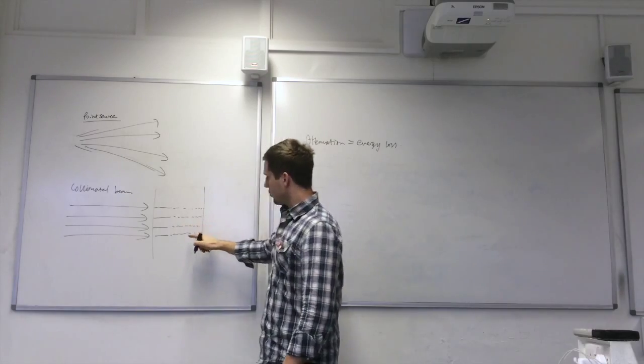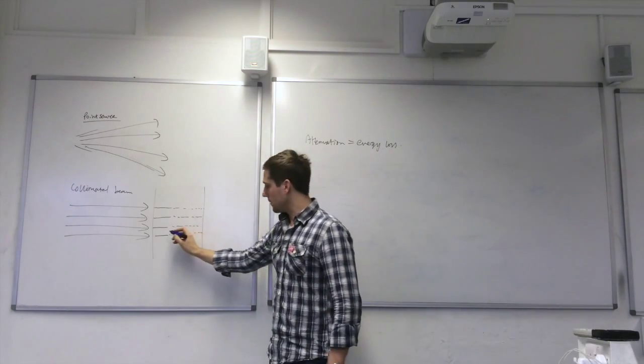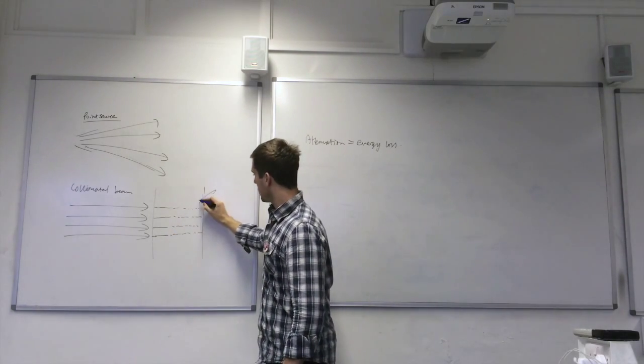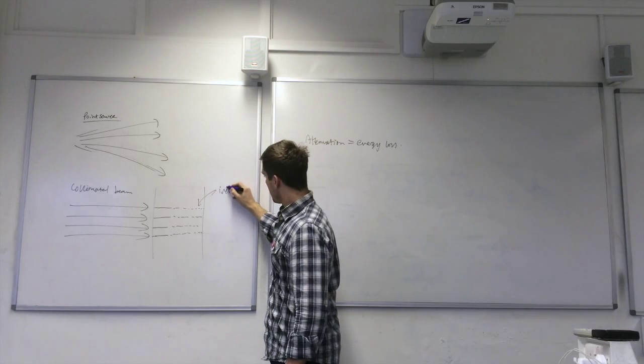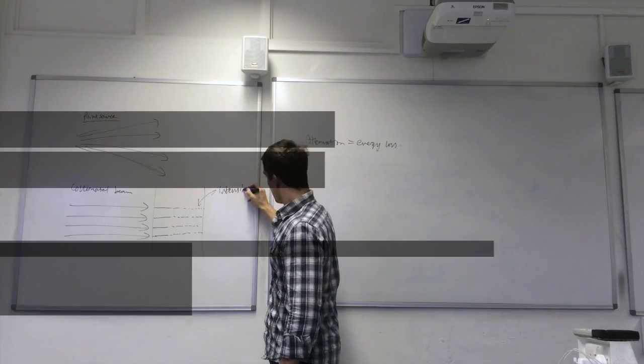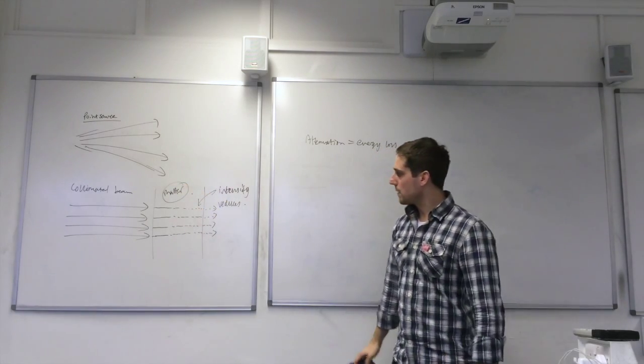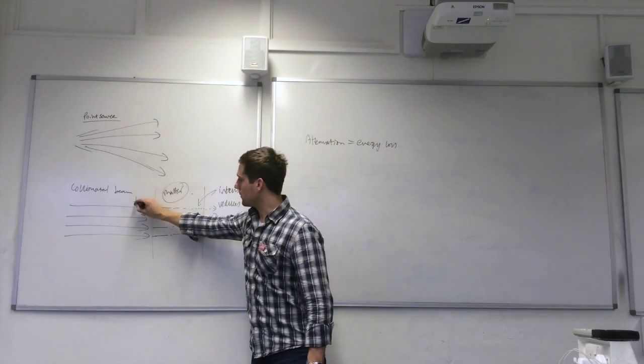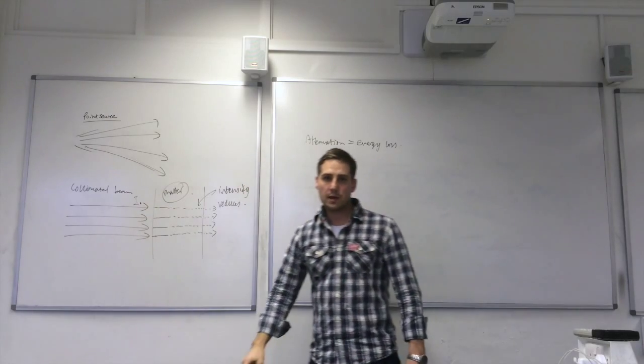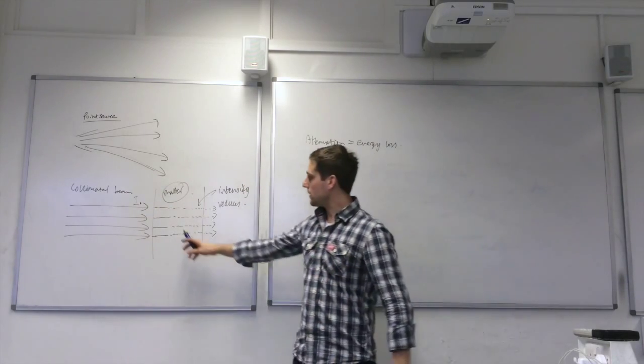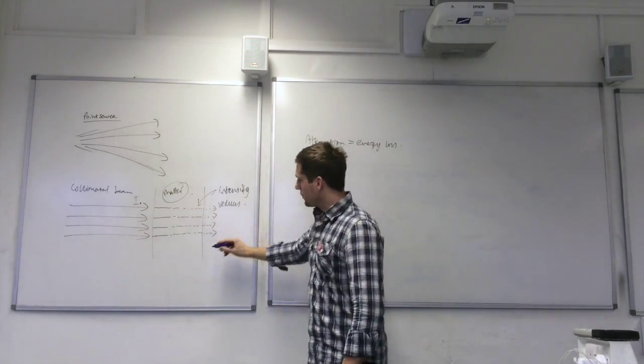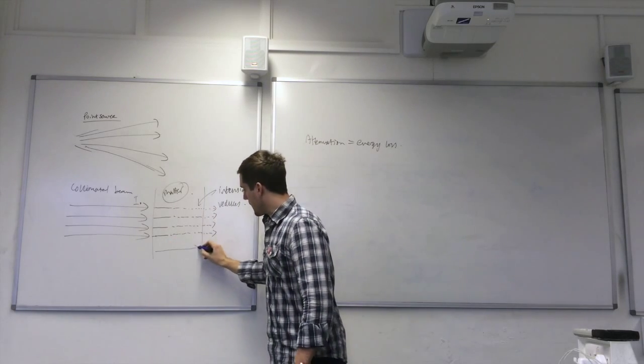So I'm drawing dotted lines here to indicate the intensity falls. That's our matter there. So we start off with a certain intensity, which would be I0, that's our incident intensity. And then the intensity falls and it decreases exponentially.